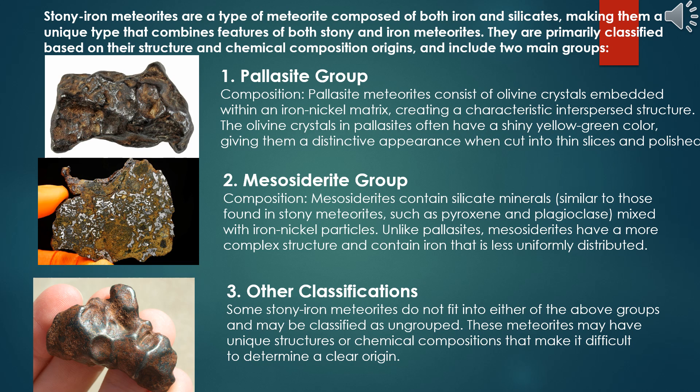2. Mesosiderite group: mesosiderites contain silicate minerals similar to those found in stony meteorites such as pyroxene and plagioclase, mixed with iron-nickel particles. Unlike pallasites, mesosiderites have a more complex structure and contain iron that is less uniformly distributed. Some stony iron meteorites do not fit into either group and may be classified as ungrouped. The analysis of stony iron meteorites often requires specialized techniques such as mass spectrometry and electron microscopy for observing crystal structure and mineral content.